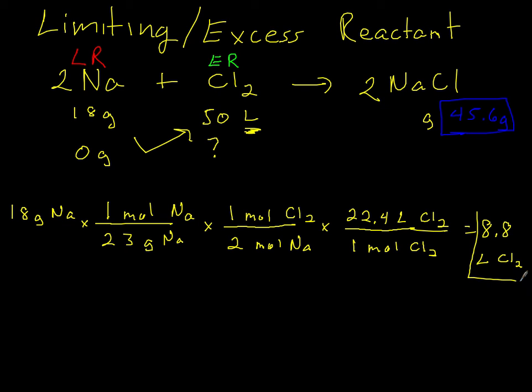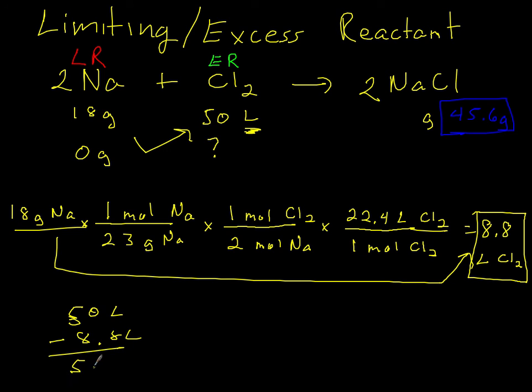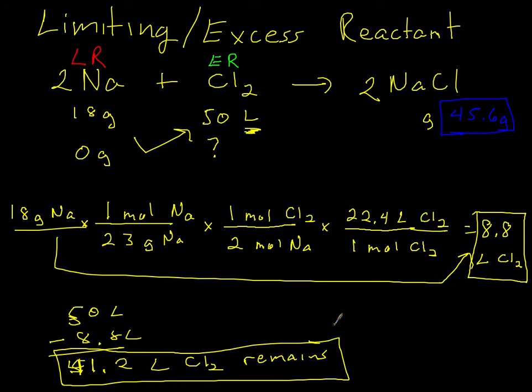So this is where you have to be able to interpret. What does that 8.8 liters of chlorine represent? Well that means if I react 18 grams of sodium, I'm going to need to use 8.8 liters of chlorine. Well if I have 50 liters of chlorine and I use 8.8 liters of chlorine, if I just do that subtraction I'll get 41.2 liters of chlorine remains. So I actually use very little of my chlorine. There was lots of chlorine left over in this case. So 41.2 liters of chlorine remains.